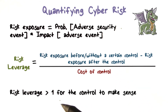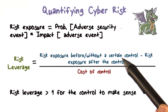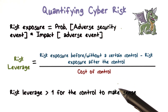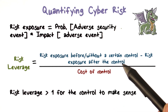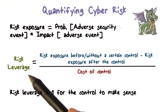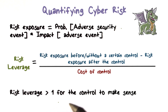For any control that you have, risk leverage should be greater than one. It makes no sense for it to be less than one, because in that case your risk reduction is actually smaller than the cost. It's not smart to pay more and overall not be in a better place in terms of cost and risk. So whenever you evaluate a particular control, if the risk leverage value is not greater than one, that control should not be considered.